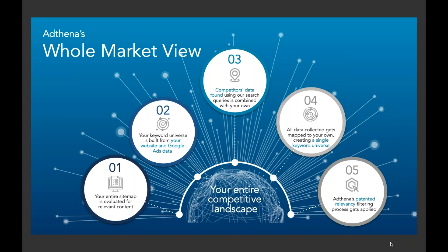Our whole market view allows leading advertisers to precisely assess competitive opportunities at scale across their entire market without limitations. We do this in a multi-step process, beginning by indexing your entire site map and scraping your website for relevant content. Your SEO strategies and content marketing will help inform your paid search strategies. From there, we build out a keyword universe based on your website and Google Ads data. We then query this information, collect all competitors found in the SERP, see what they're advertising on, and build a single search term universe.